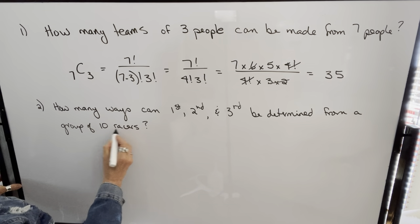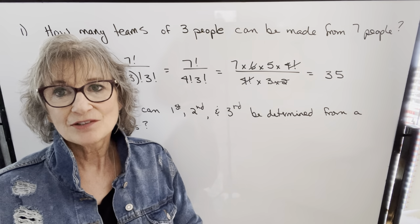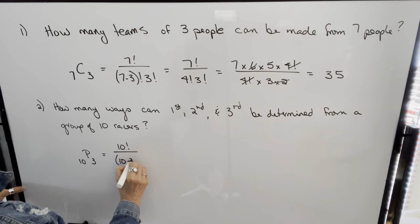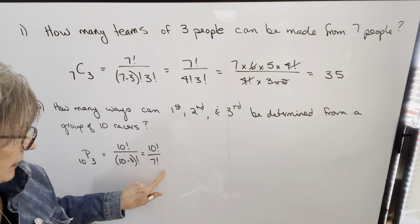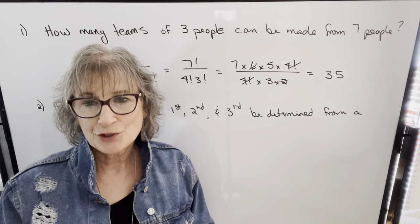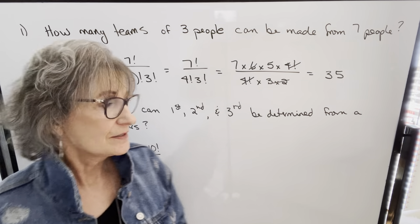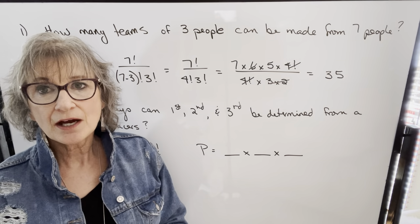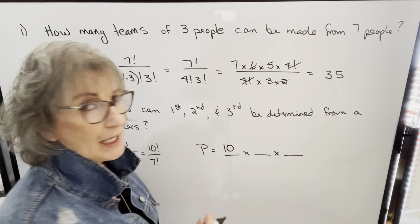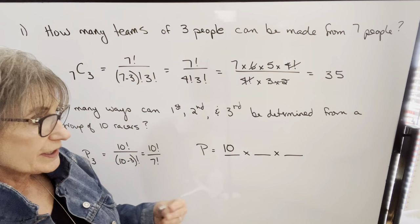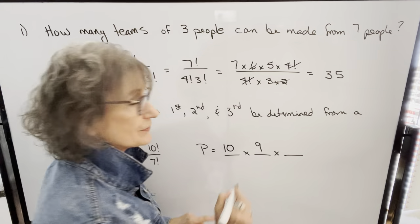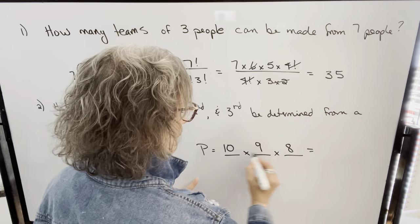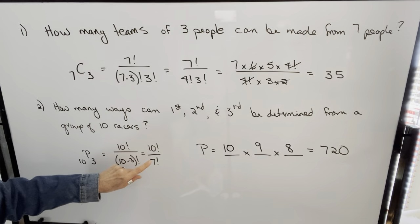We use our permutation formula: 10P3, how many different ways can I get those top three positions? The formula gives 10 factorial over (10 minus 3) factorial, which is 10 factorial over 7 factorial. I'll use the multiplication principle instead: for first place, I have 10 choices. After first place is decided, I have 9 choices for second place. Once first and second are determined, I have 8 choices for third place. So the number of permutations is 10 × 9 × 8 = 720, which is the same result as using the formula.